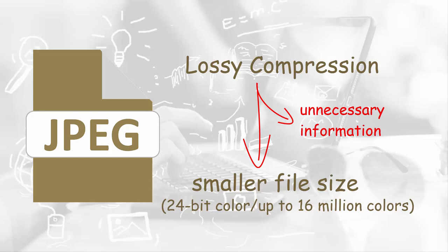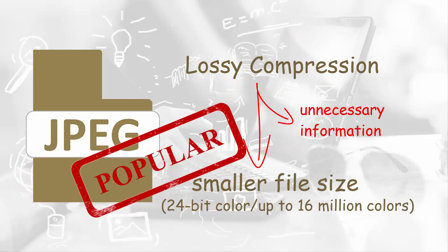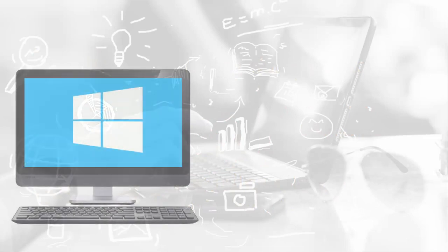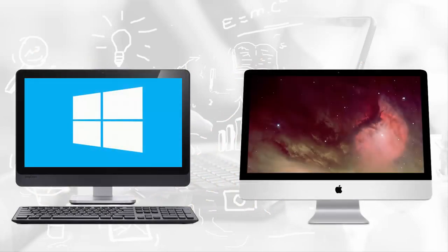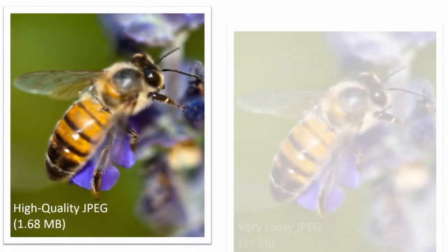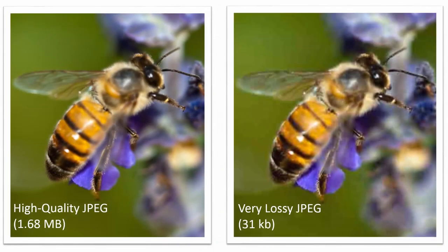This color richness, in addition to its smaller size, makes JPEG one of the most popular image formats, and it is now the standard file format for most digital cameras. Another advantage of the JPEG format is that it is also compatible across different computer platforms such as PC and Mac, and many different editing programs and web browsers. These images show a comparison of a high-quality JPEG on the left and a very lossy JPEG on the right. As long as an image is not overly compressed, a high-quality JPEG is usually sufficient for most uses.